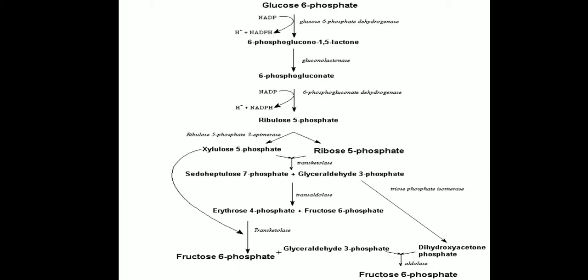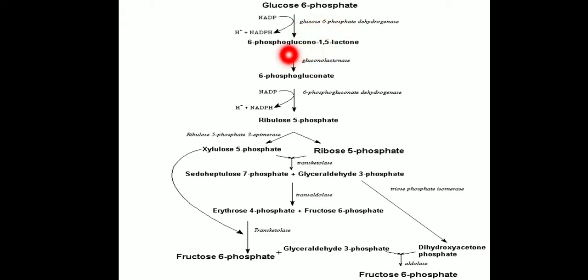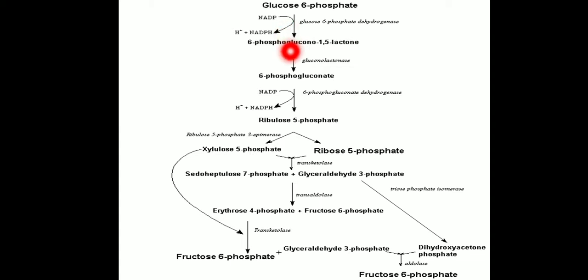Here two stages are shown: the first one is the oxidative stage and the second one is the non-oxidative stage. In the oxidative stage, glucose 6-phosphate is converted into 6-phosphogluconolactone in the presence of glucose 6-phosphate dehydrogenase. Here NADP is converted into NADPH plus H positive.